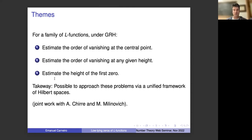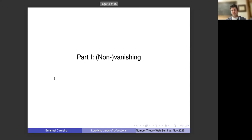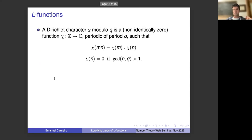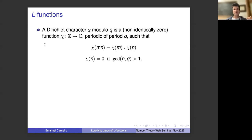This is all based on joint work with Andres Chirian and Micah Milinovic. It's on the archive if somebody wants to check it out later. So first part: non-vanishing of L-functions. Let's start with the most basic types. A Dirichlet character chi modulo q is a function which is periodic of period q, completely multiplicative — chi of mn equals chi of m times chi of n — and it's zero if the number is not co-prime with q.